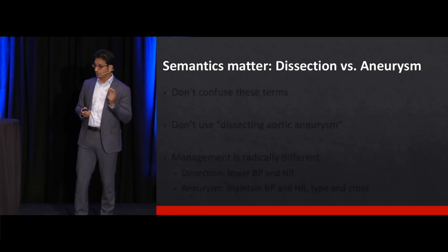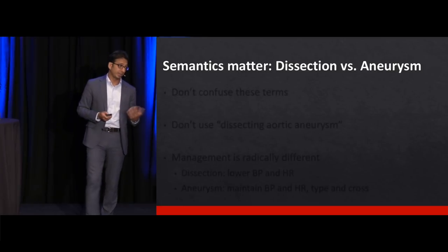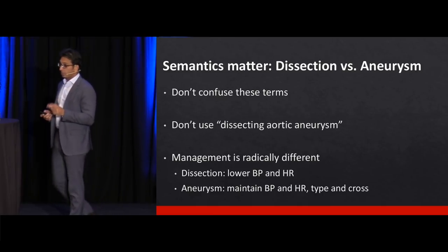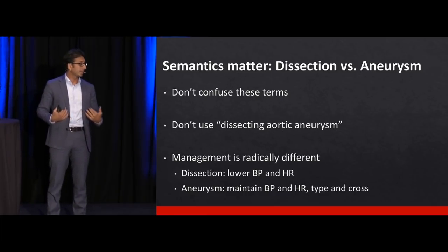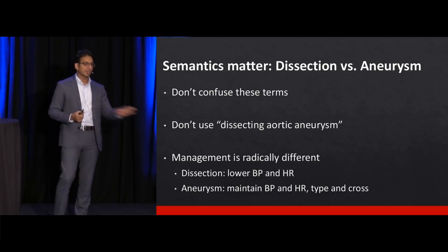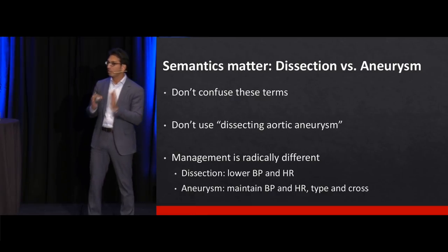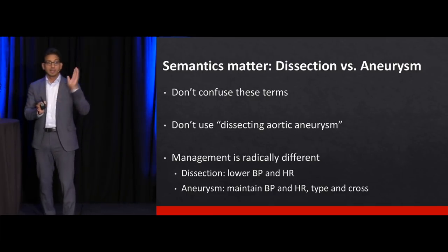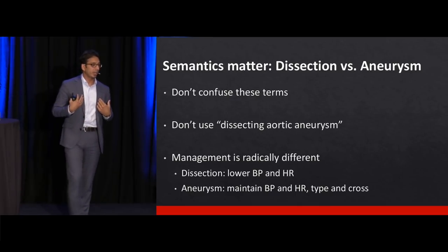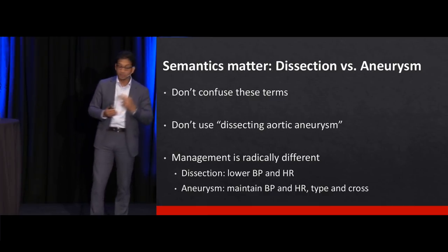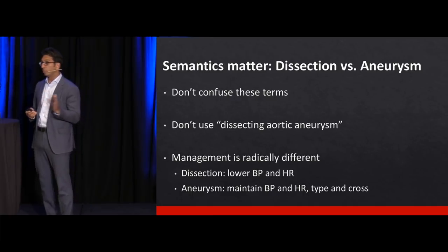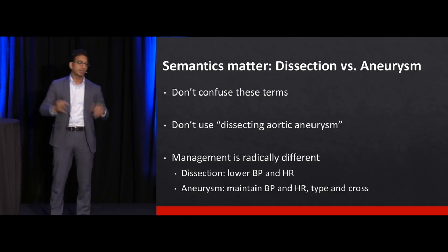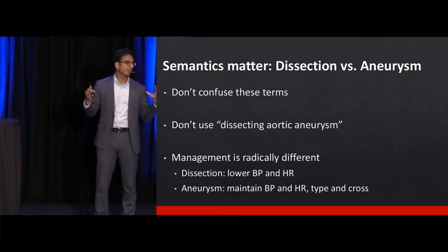Semantics matter: the term dissection versus aneurysm really, really does matter. Don't say 'dissecting aortic aneurysm' — management is completely different. With an aneurysm — thoracic or abdominal — you're not trying to lower blood pressure; their pressure may drop on its own. You just want to type and cross, and get them to the OR. With a dissection, you definitely want to lower blood pressure and heart rate. Dissection is within the wall; aneurysm usually involves all the walls.